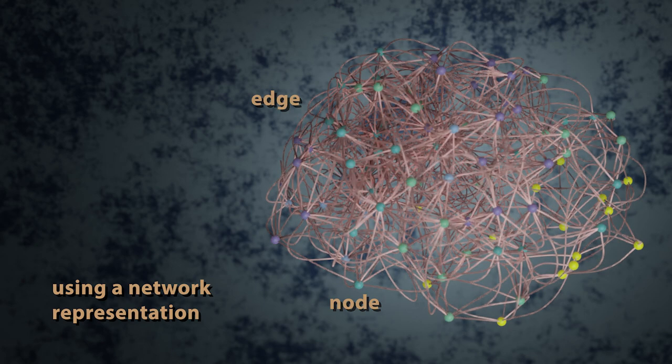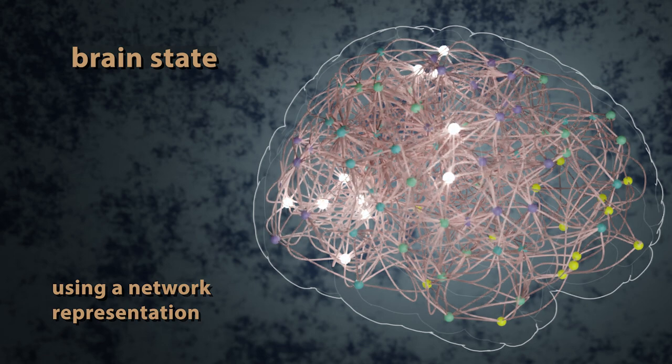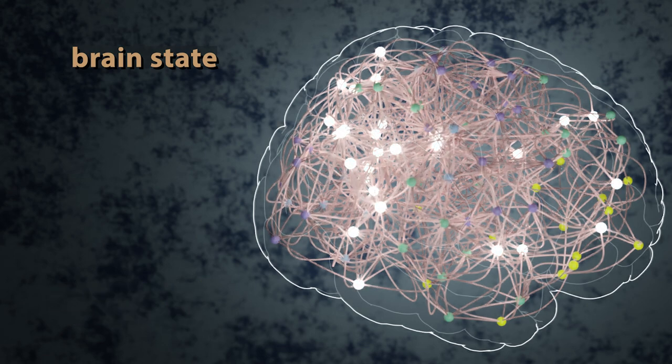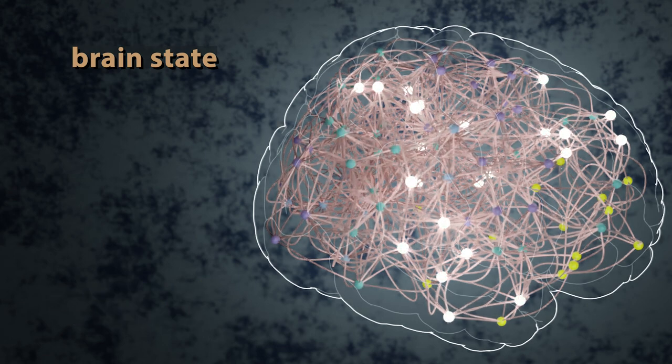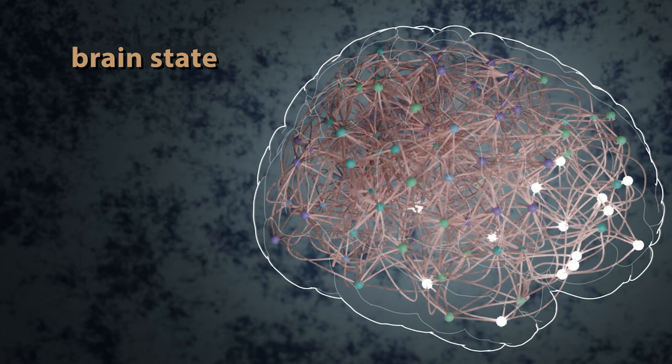Within this network representation, we can think of the brain's activity as moving through a series of states over time, where a state is simply a specific pattern of activity at each node.